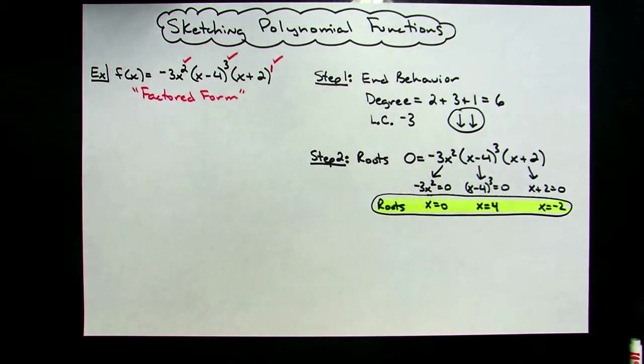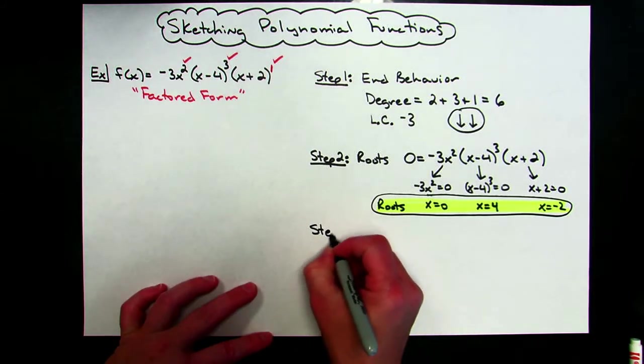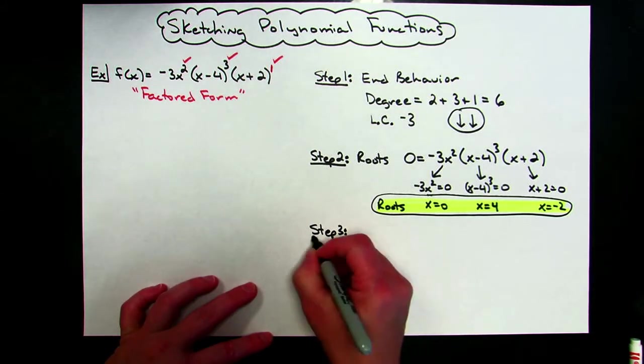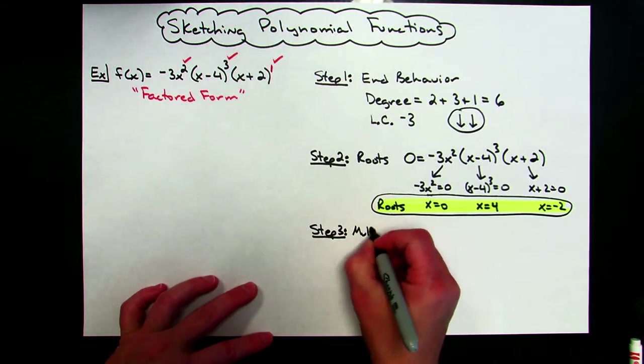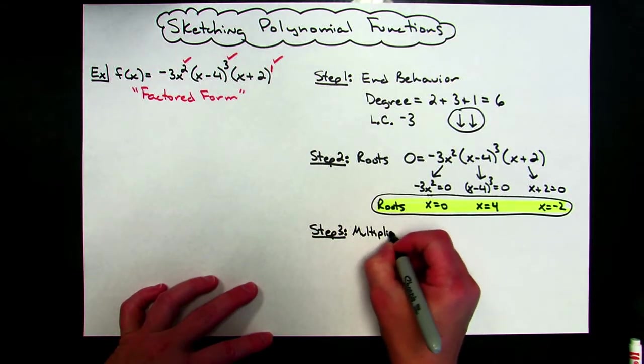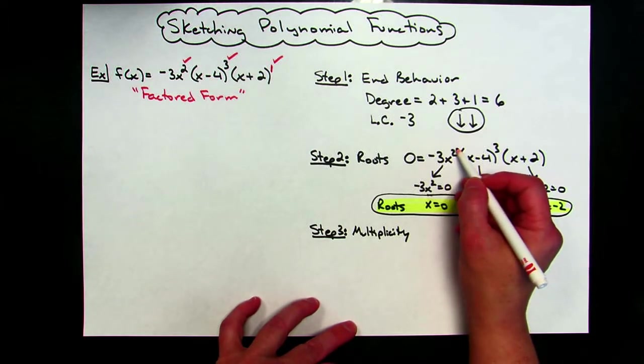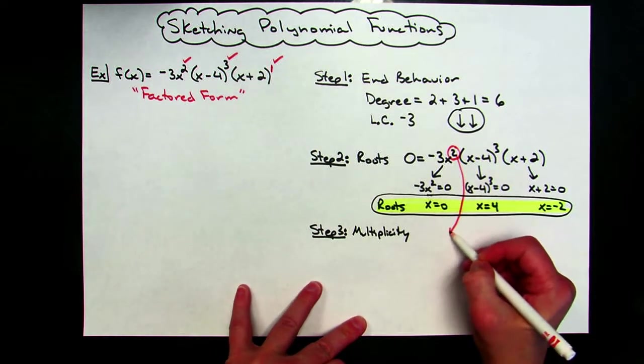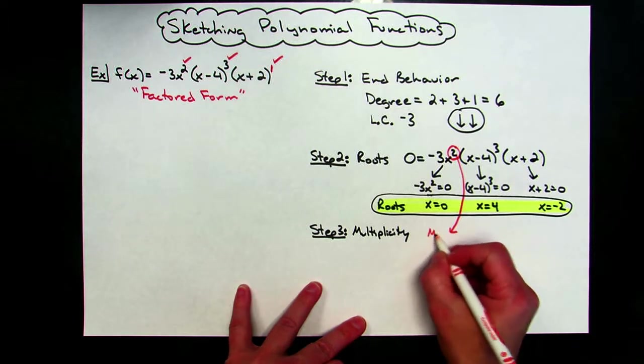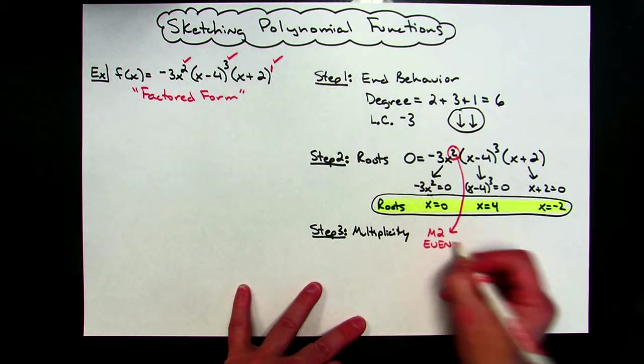All right, now, step three, I'm going to need to take a look at the multiplicity. Okay, so step three, multiplicity. Okay, now, if you recall where you find your multiplicity at, it's how many times those roots occur. All right, this has an exponent of two, so that means that for my root, x equals zero, I have a multiplicity of two, and that would be an even multiplicity.